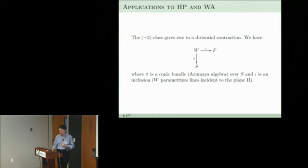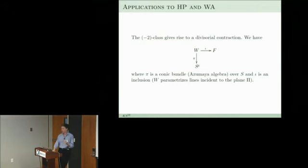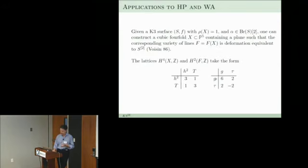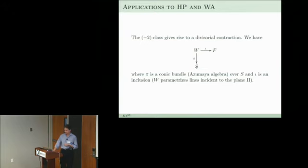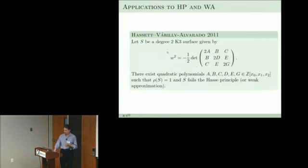In this example there is a minus-2 class with a divisorial contraction, so the variety of lines contains a conic bundle over the K3 surface as a divisor, which gets contracted. In other words, when you look at these lattices and find your minus-2 class, you get a conic bundle — and that conic bundle is the geometric realization of a 2-torsion Brauer class inside this variety.